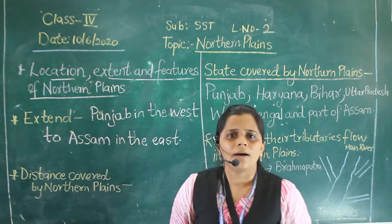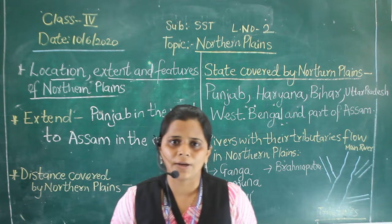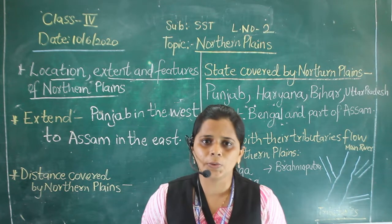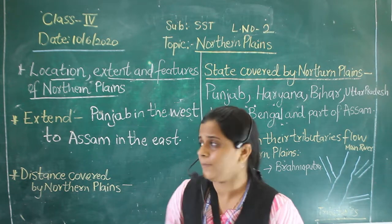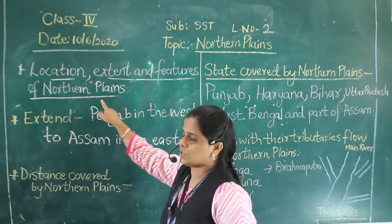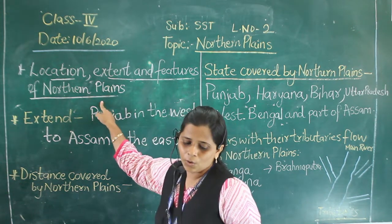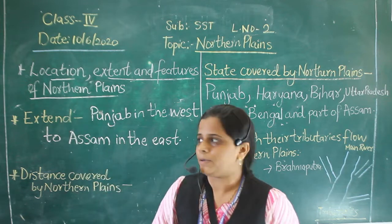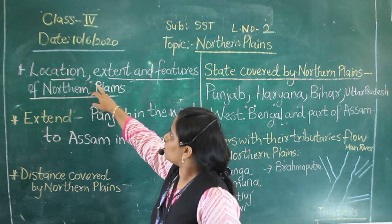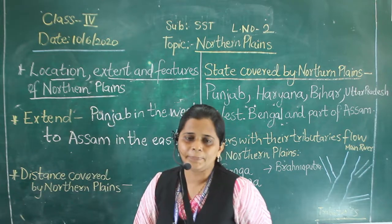My dear children, I have divided this chapter into 5 parts. The first part which we are going to learn is the location, extent and the features of the northern plains. So now let's start. If we talk about the location, extent and the features of the northern plains.